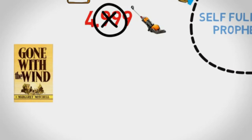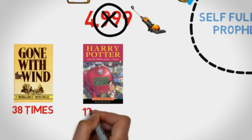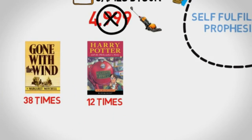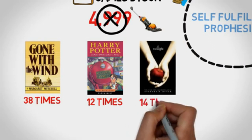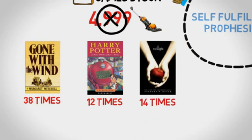Let's look at the famous book, Gone with the Wind. This was rejected 38 times before being published. Harry Potter was rejected 12 times and Twilight was rejected 14 times.